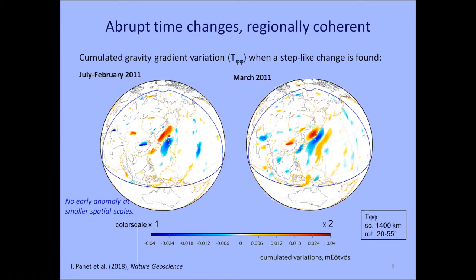We have shown that the step-like changes of the time series around Tohoku start a few months before the rupture in a regionally coherent way over a wide area. As shown on the left map, there is a gravity gradient increase spatially coherent over 1,000 to 1,500 kilometers along the northwestern Pacific subduction. At the same time, a gravity gradient decrease south of the triple junction, followed also by a regional scale change in March 2011. This pattern contrasts very much with results from the rest of the area delimited by the blue line, where we do not have such consistency.